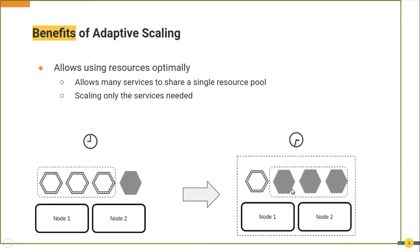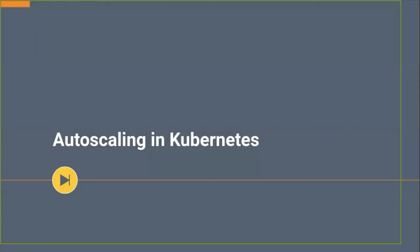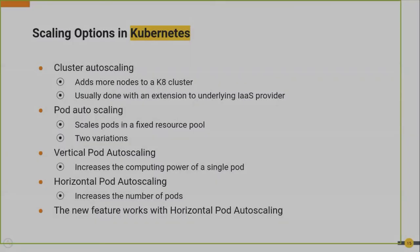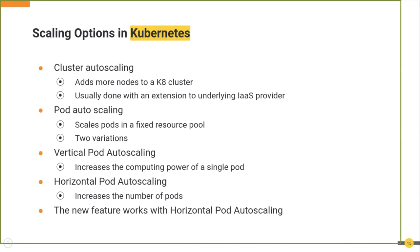These two services use the same resource pool but allocation is done in a dynamic fashion — resources are allocated when demand arises. This is another advantage offered by auto scaling. Now that we have some idea about auto scaling and the benefits it offers, let's look at how auto scaling works in Kubernetes. The feature we developed was done by extending certain Kubernetes capabilities, so knowing about auto scaling options will help us understand it better. Kubernetes offers auto scaling in two main ways.